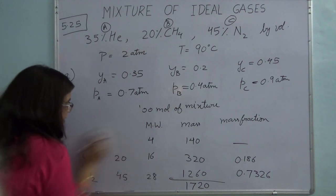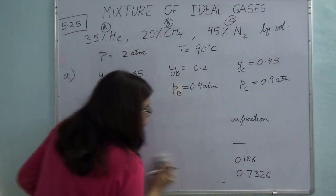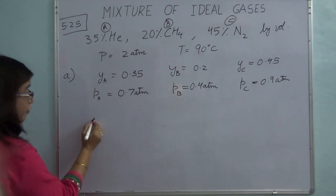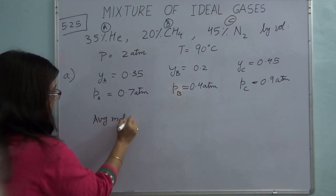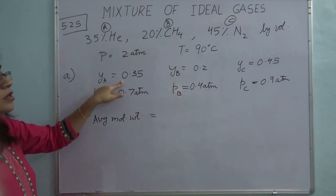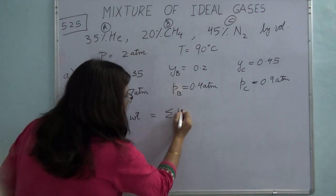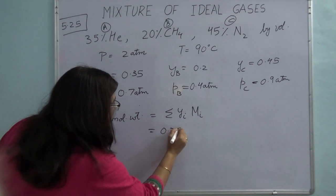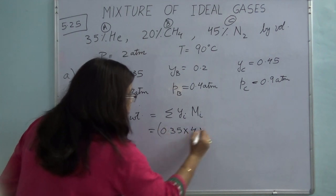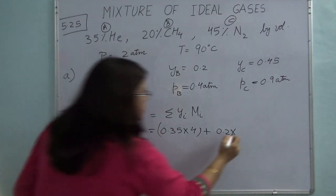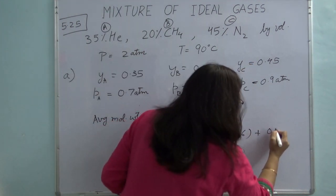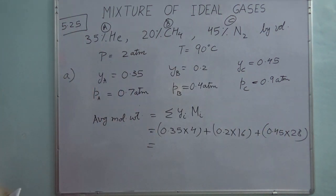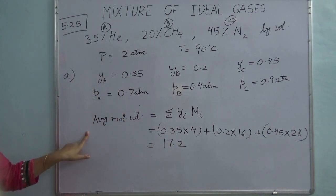Part C asks for the average molecular weight of the gas mixture. Average molecular weight = Σ(yi × Mi) = 0.35 × 4 + 0.20 × 16 + 0.45 × 28 = 1.4 + 3.2 + 12.6 = 17.2. So the average molecular weight is 17.2.